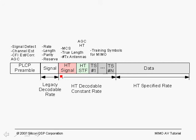For a MIMO high throughput packet, the signal field is followed by the high throughput signal field, which is 8 microseconds wide. In the high throughput signal field, you specify what the modulation coding scheme is, the true length of the packet, the number of transmit antennas, and other parameters — for example, whether this is a 20 MHz or 40 MHz bandwidth system.